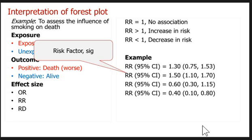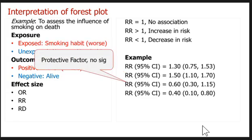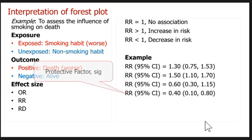So we can say the second example is a risk factor and significantly associated with the outcome. Based on the third example, the value is less than 1 and the confidence interval contains 1, so it is a protective factor but not significant. Finally, in the fourth example, the risk ratio is less than 1, and both the lower and upper values are also less than 1, so it is a protective factor and significantly associated because the interval doesn't contain 1.